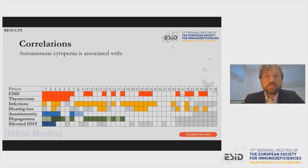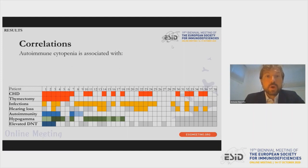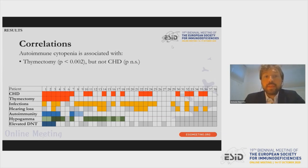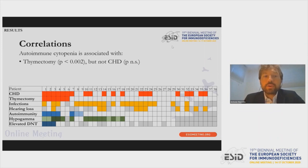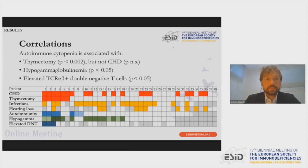The most important information is putting all these manifestations together to see if they cluster. We picked autoimmune cytopenia as the most severe immunological manifestation and saw if it correlated with others. We observed that thymectomy was strongly correlated with autoimmune cytopenia, but there was no correlation between congenital heart disease and autoimmune cytopenia — suggesting thymectomy may have a role in predisposing patients. Autoimmune cytopenia also correlated with hypogammaglobulinemia and, importantly, with elevated double negative T cells.